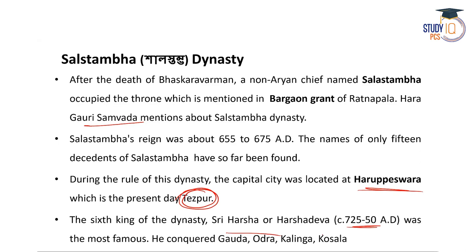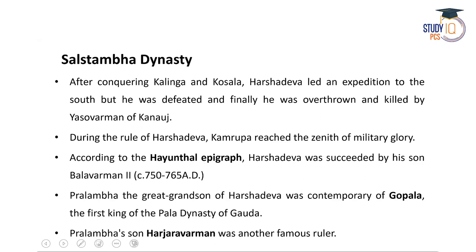The sixth king of the Salastambha dynasty was Sri Harsha or Harshadeva, who ruled from 725 to 750 AD and was the most famous ruler. He conquered Gauda, Odra, Kalinga, and Kukhala. After these conquests, Harshadeva led an expedition to the south, but was defeated and finally killed by Yashovarman of Kanauj. During his reign, Kamrup reached the zenith of military glory.